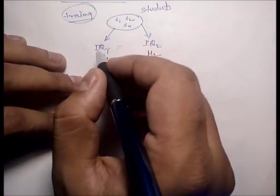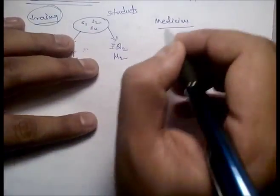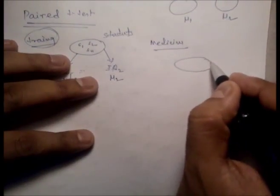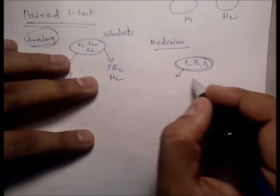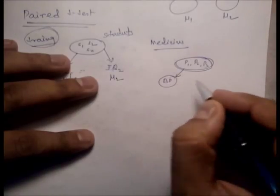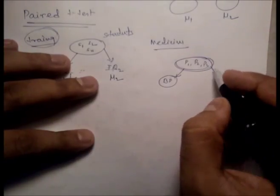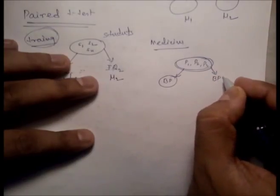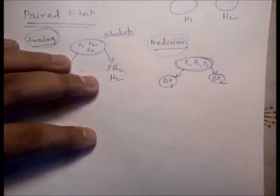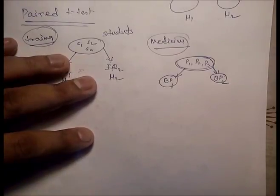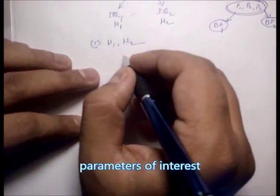Similarly, to check whether a medicine is effective, we take some patients and measure blood pressure before applying the medicine. After applying the medicine, we measure blood pressure again for the same patients and check whether the medicine is effective. In the paired t-test, mu1 and mu2 come from the same population.